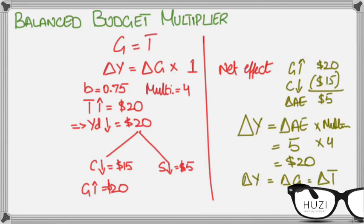So, equal increments in government expenditure and net taxes expand equilibrium income by an amount equal to the rise in government expenditure and net taxes. So this is all about balanced budget multiplier which is always 1.